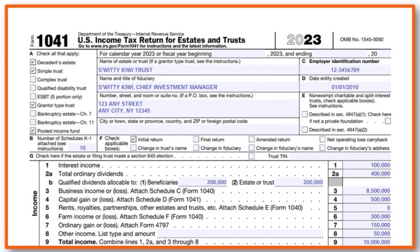Here is how the form actually shows. You have to put your first name, last name, and the name of the estate. You also have to put the EIN for the trust, and check all that apply to the estate - whether it's a simple trust, a grantor trust, and so on. You have to put your name and title of the fiduciary, the date the entity was created, and the street address.